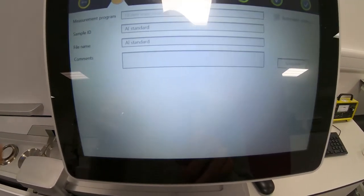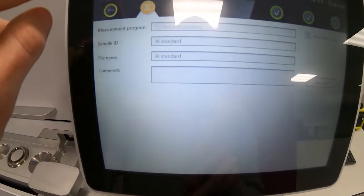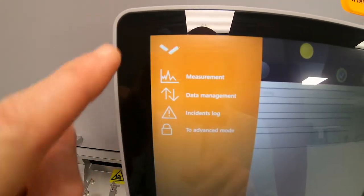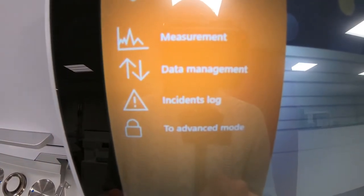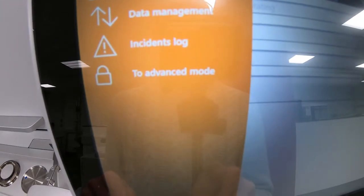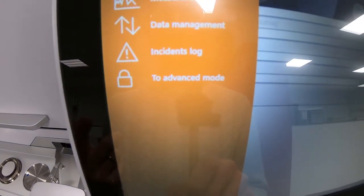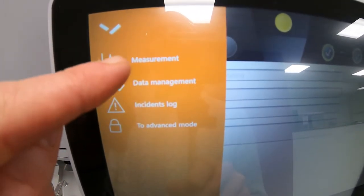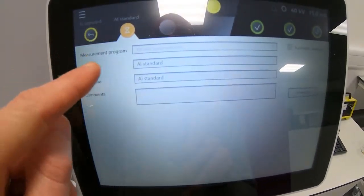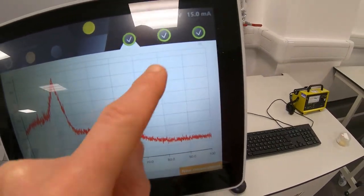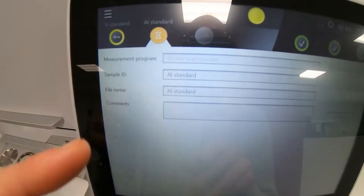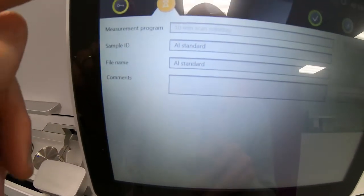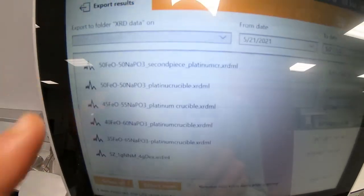So while we're waiting, I'll just quickly talk you through the menu system. We press this burger icon up here. You can see we've got some options: measurement, data management, incident log, and to advanced mode. You won't be able to go into advanced mode, but if we talk about the first one, that's how you get to this screen where you can view the data that's already been collected or which data is being collected or which data is waiting. If we go to data management, this is where we transfer our data to our memory stick.